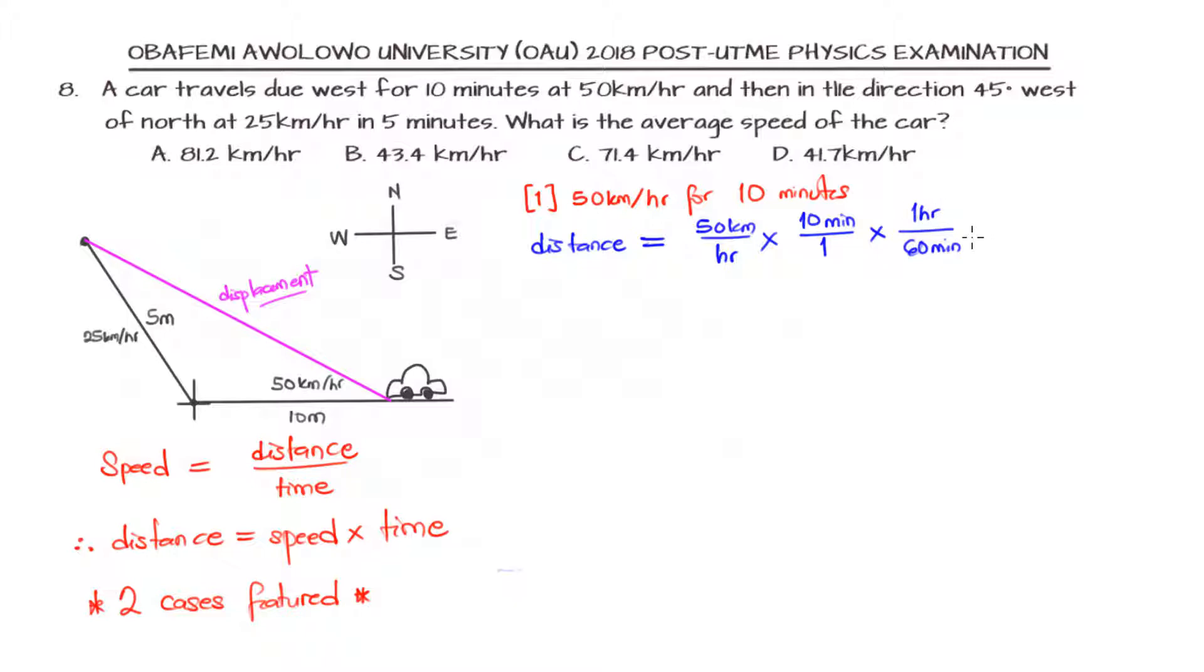The minutes from the denominator and numerator will cancel out, the hours will cancel out. So now we can have our distance to be 500 kilometers divided by 60. That's the distance. You can see how I took care of the units such that hours and minutes are not constituting any nuisance.